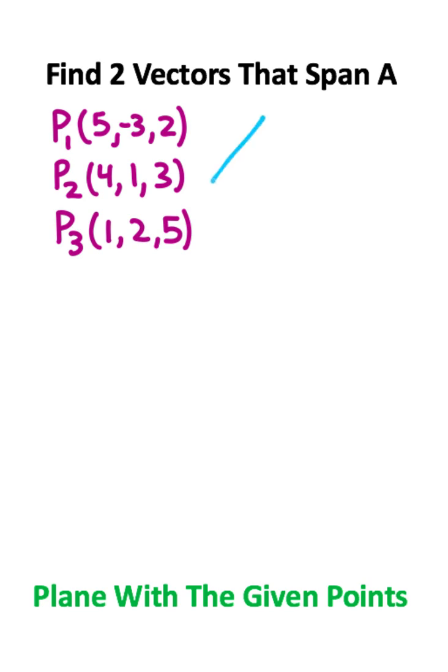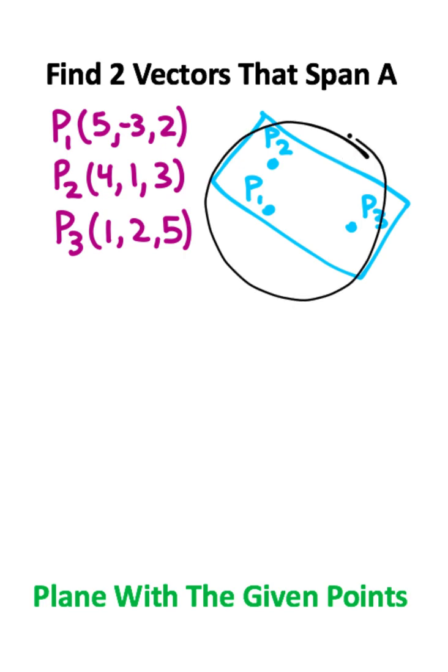Basically what's happening is we have this plane in space and it contains these three coordinate points. Now our objective of this problem is to find vectors that span this plane. The way we can actually do that is by looking at one reference point, in this case I'll pick point one, and subtracting off the other two points.